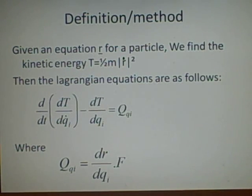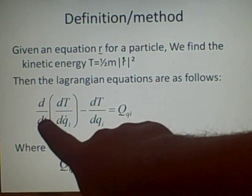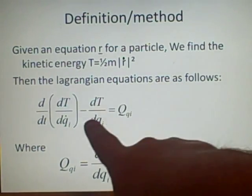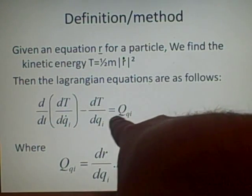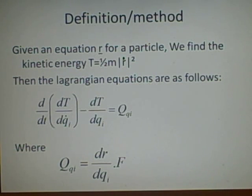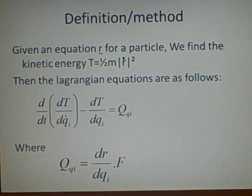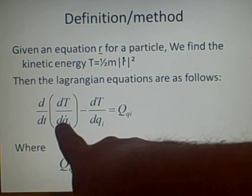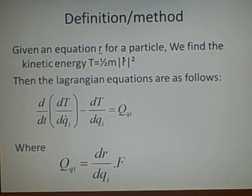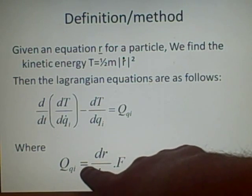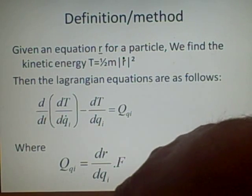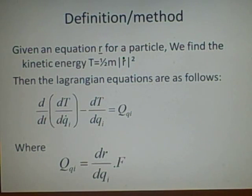Then we find the Lagrangian equations as follows: we have d over dt of dT over d(q-i dot), where the q-i's represent the different variables in our equation T. So if we had x and x-dot in here, we'd have x-dot, x. When differentiating, we treat them as separate variables — the x-dots and x's are not related in any way. Our Q-i equals dR over d(q-i), dotted with f, which is the external forces.